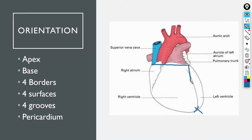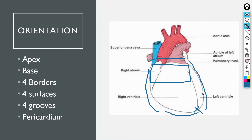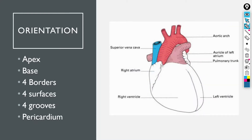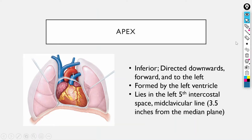Posteriorly there is a part called the base. We have four borders: one superior, one on the right side, one inferior, and one on the left side. We have four surfaces — one anteriorly, one posteriorly, and one on either side — four grooves, and the heart is enclosed in a sheath called the pericardium.